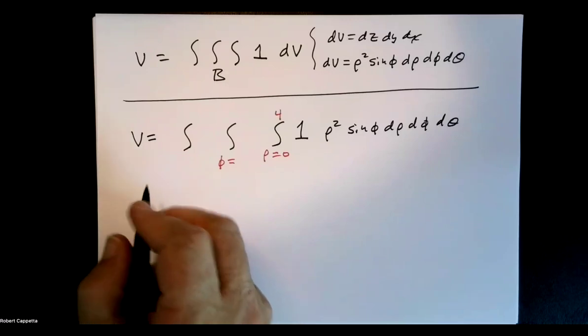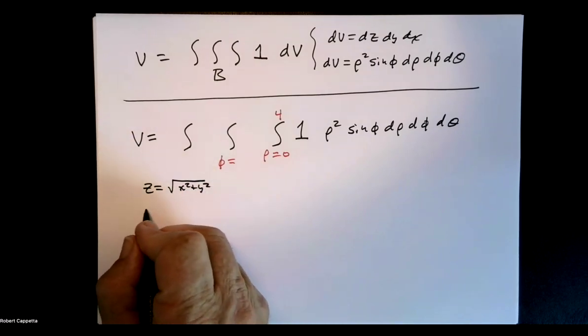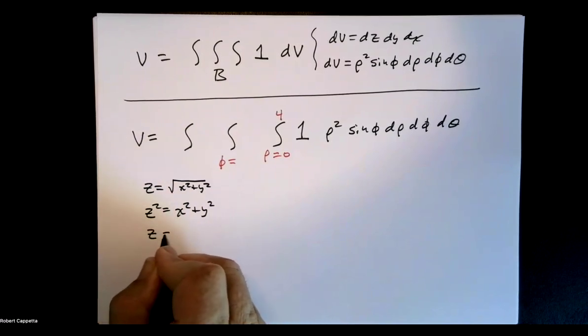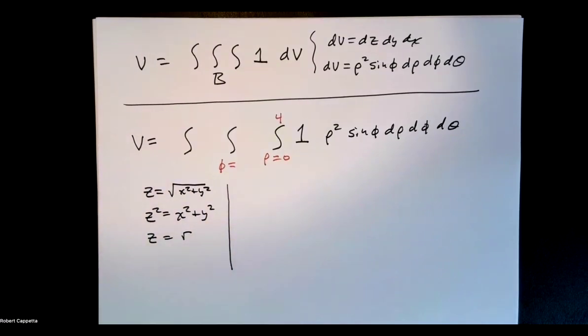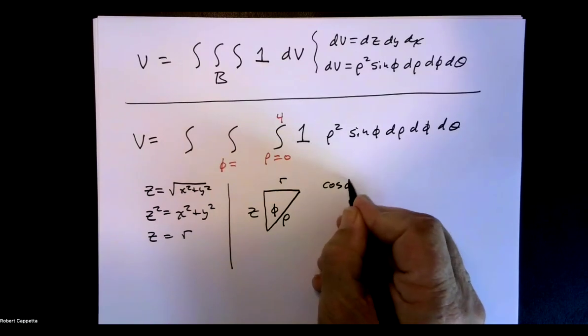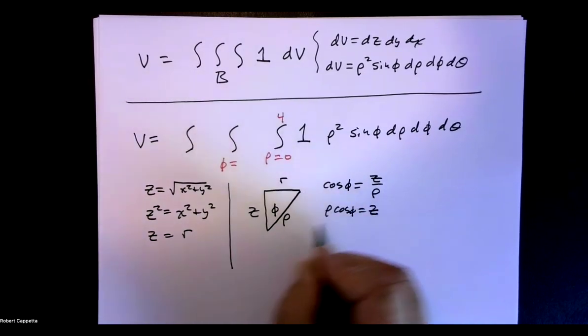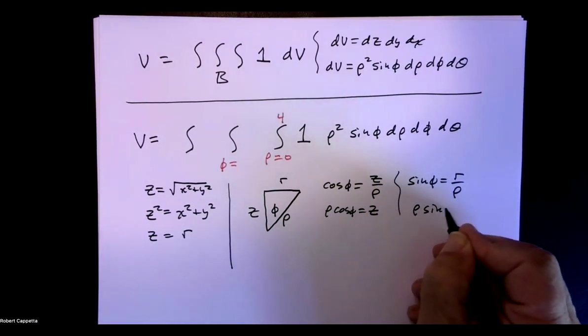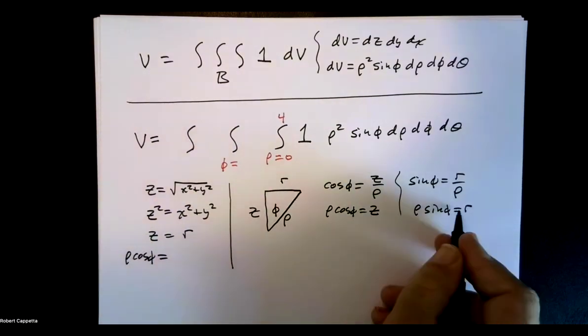The equation of that cone was z equals root x squared plus y squared. So z squared equals x squared plus y squared, so z equals r. So let's start there to see if that works for us. And then we have our favorite triangle that we work with with spherical coordinates. So here's our relationship. If we're going to deal with z first, that's adjacent over hypotenuse, so cosine of phi is z over rho. So rho cos phi equals z. And sine phi is r over rho, so rho sine phi equals r. Now my equation here says z equals r, so z is rho cos phi equals r equals rho sine phi.